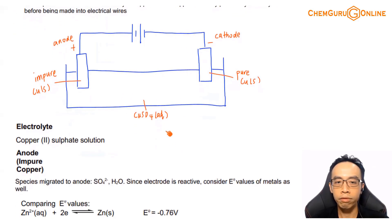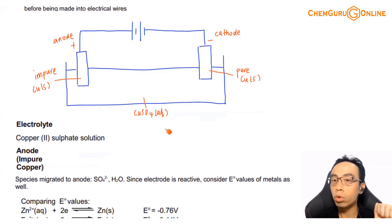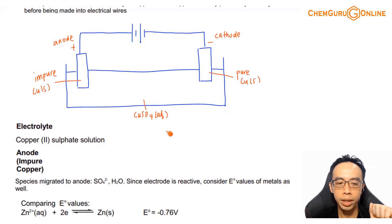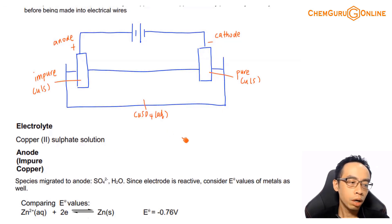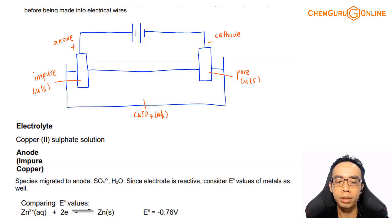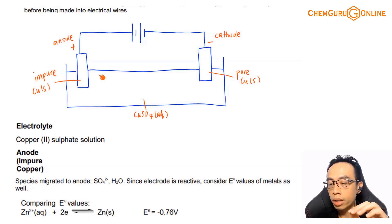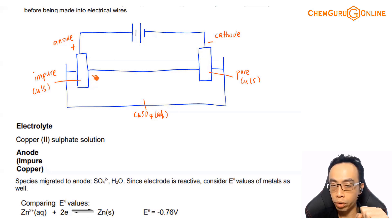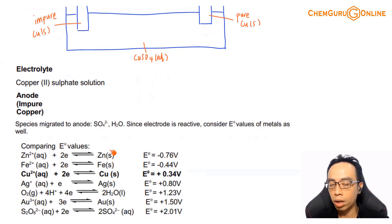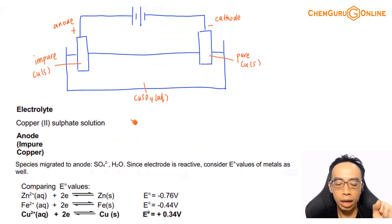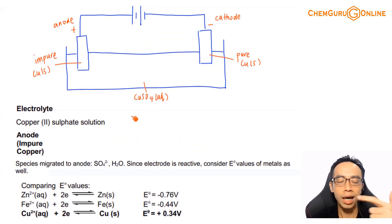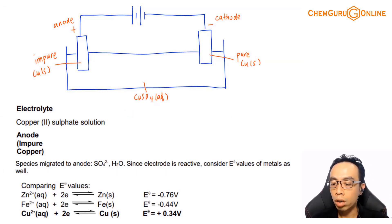The story usually starts at the anode with the impure copper. At the anode, we consider oxidation of the anion sulphate — which is stable and won't be discharged — as well as water, since this is aqueous. And since the anode is a reactive metal, we must consider oxidation of all metals present in the impure copper, which includes zinc, iron, copper, and everything else, because all these metals can potentially undergo oxidation.